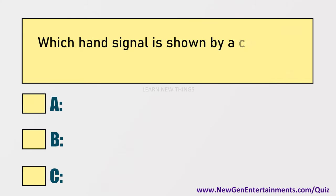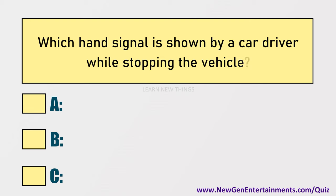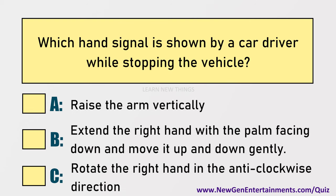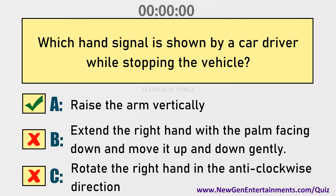Which hand signal is shown by a car driver while stopping the vehicle? Answer: Option A, Raise the arm vertically.